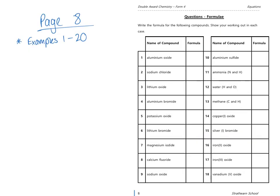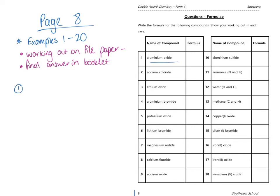Now I'd like you to turn to page eight and the start of page nine and try examples one to twenty. You should do your working out on file paper and write your final answer in your booklet. Let me show you how to set out example one. The question asks you to write the formula of aluminium oxide. Take your file paper with a title of 'Formula' and page eight of your equations booklet, and write out the name of the compound.